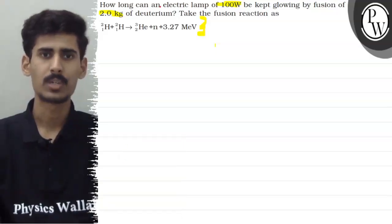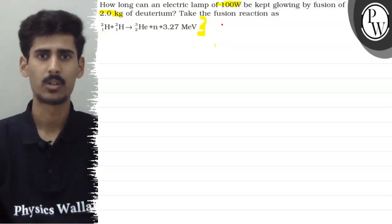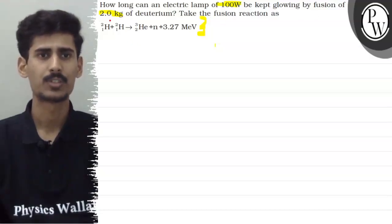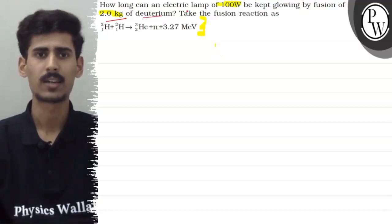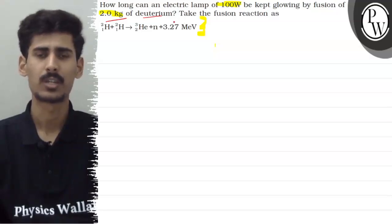Our question is given that our electric lamp has a power of 100 watts and that should be kept glowing by the fusion of 2 kg of deuterium. So, how long will that electric lamp be glowing when the fusion of this 2 kg of deuterium happens?